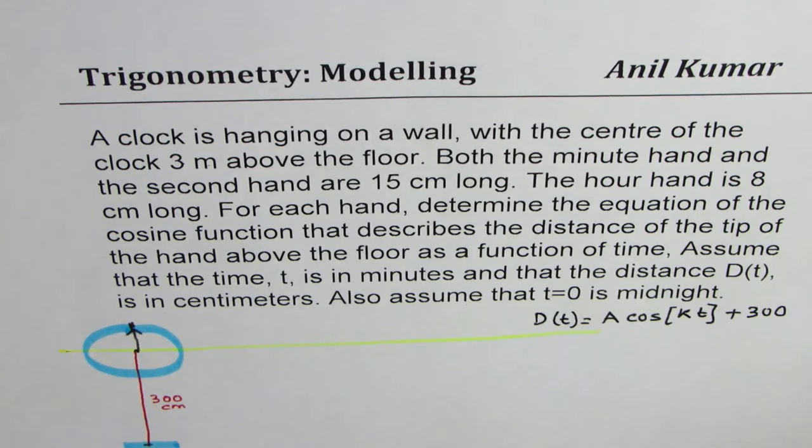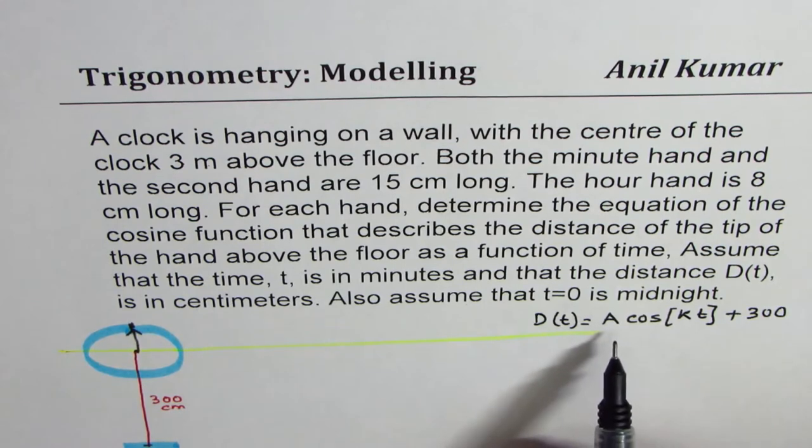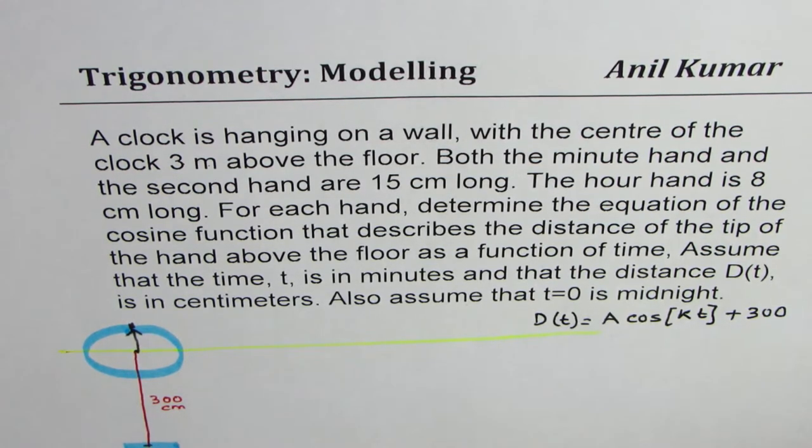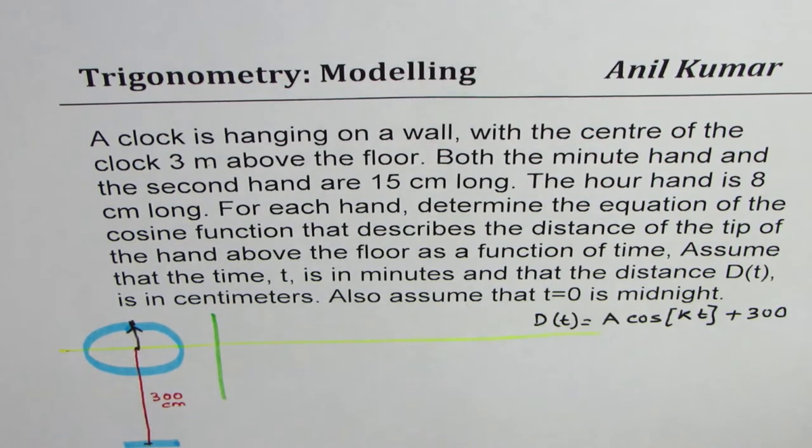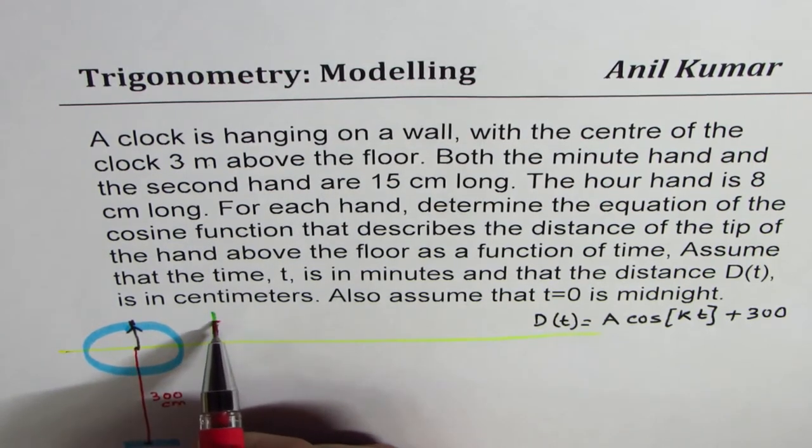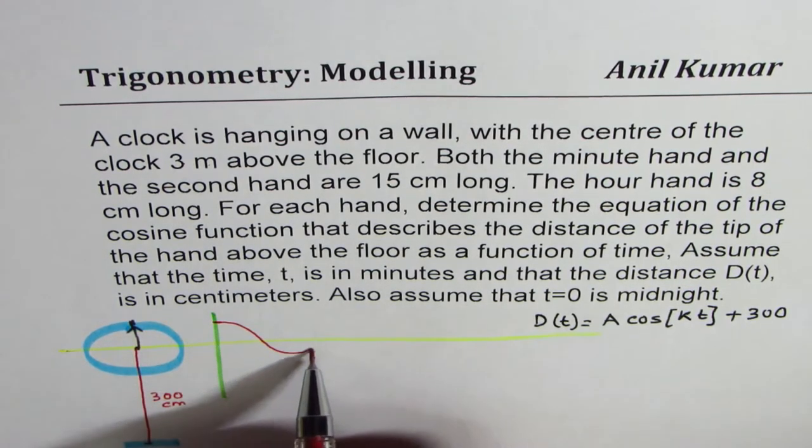So that, in general, becomes the equation for all the three cases. When you consider the minute hand, as you can see here, as the clock, as the time ticks, it moves from this position and kind of goes like this.